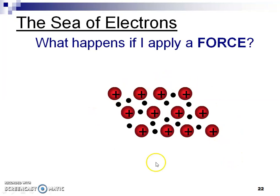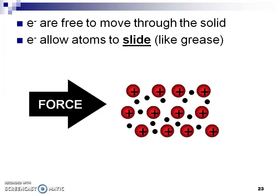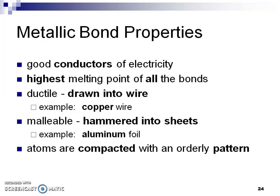If we have a metal and apply a force to it, what happens to that sea of electrons? It's just going to shift — it's going to slide like grease. That's why we can mold metals into shapes. Some properties we've already discussed: they're good conductors of electricity because of all those electrons moving around, they have very high melting points, they're ductile — like copper wire — they're malleable — like hammering aluminum foil — and they're usually packed in some kind of orderly pattern.